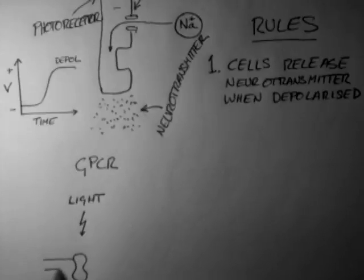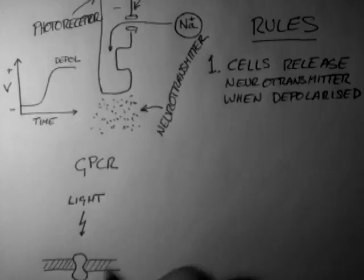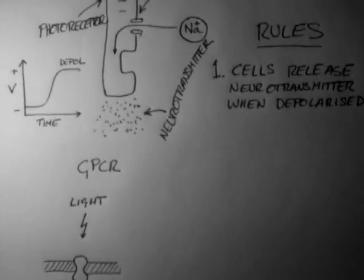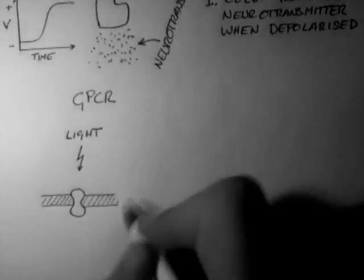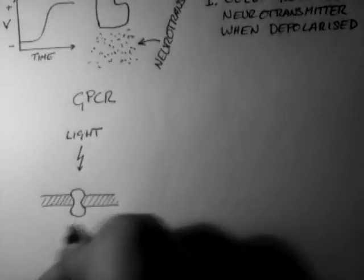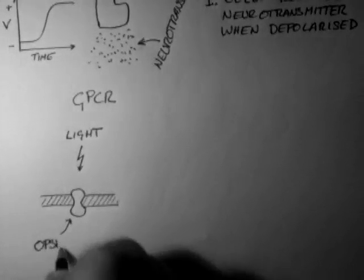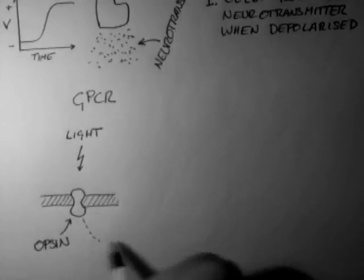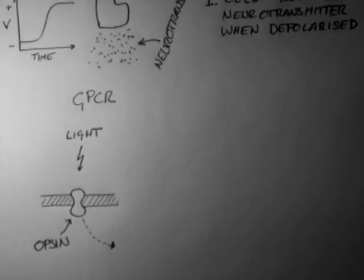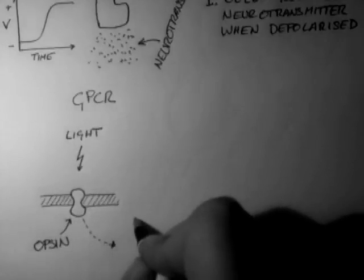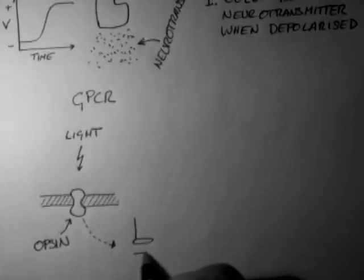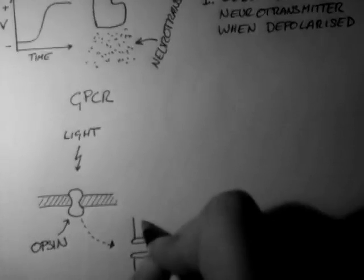When light comes into the photoreceptor, it hits this protein called an opsin. Now through a series of events which I don't want to go into here, this controls whether the sodium channel is open or closed.